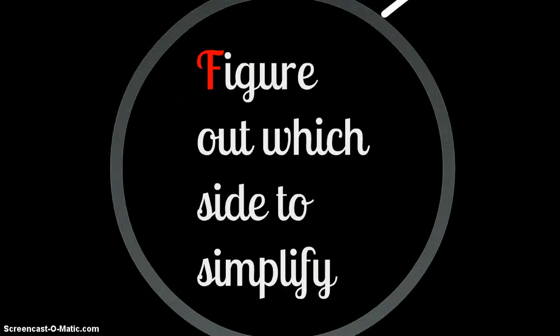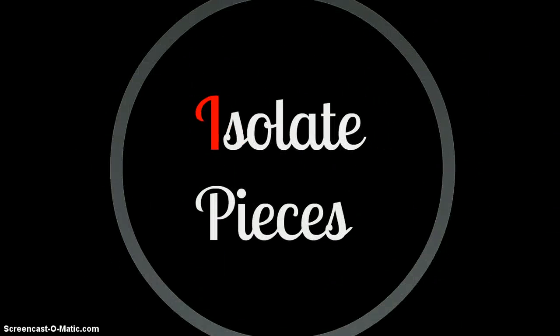Okay, here's a mnemonic to help you remember how to solve these. FIT. First, you're going to figure out which side to simplify. Then you're going to isolate the pieces, so break it into parts and look at what each individual thing can be turned into based on the identities.